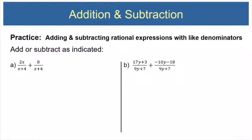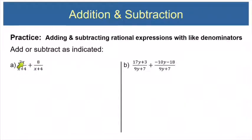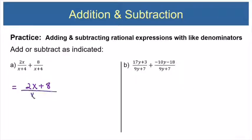Here are a couple of examples for us to work on. In both of these, the denominators start out already the same. If the denominators are the same, all you have to do is add the tops together and leave the denominator the same. In this case, 2x plus 8 is just that — 2x plus 8 — and the denominator is x plus 4.